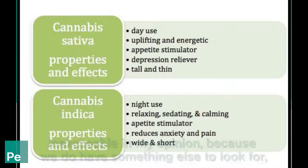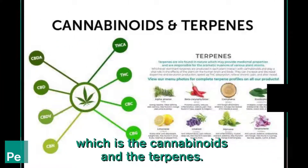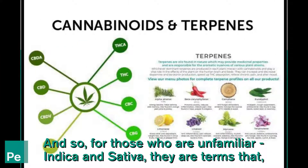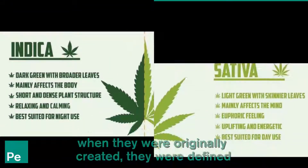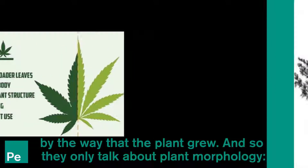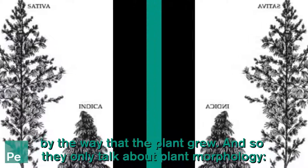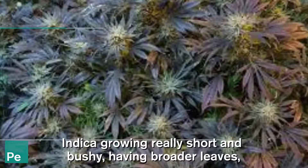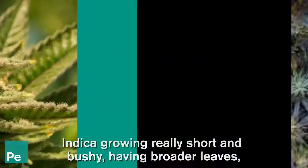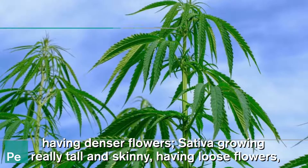That is inexcusable in my opinion, because we do have something else to look for, which is the cannabinoids and the terpenes. For those who are unfamiliar, indica and sativa are terms that, when they were originally created, were defined by the way that the plant grew. They only talk about plant morphology — indica growing really short and bushy, having broader leaves, having denser flowers; sativa growing really tall and skinny, having loose flowers and skinny leaves.